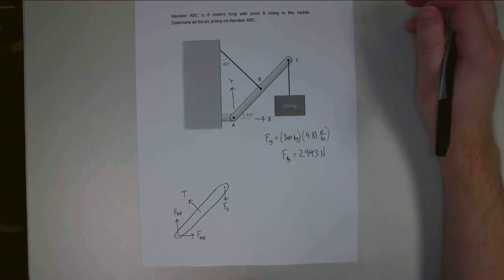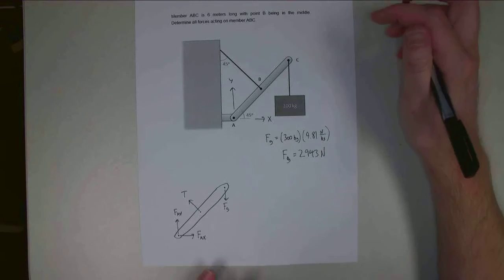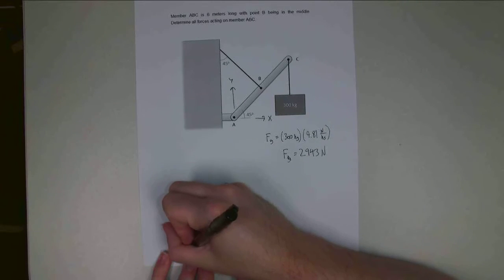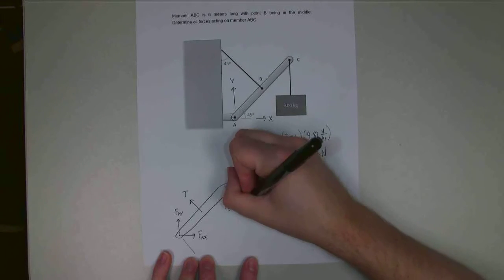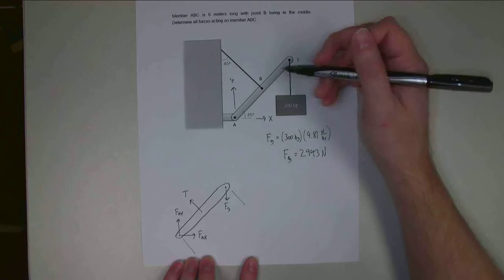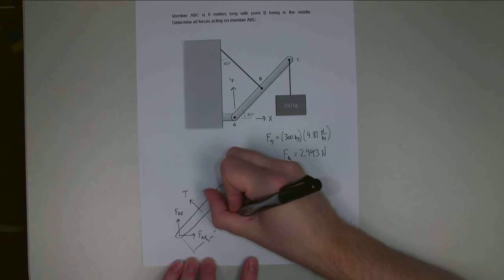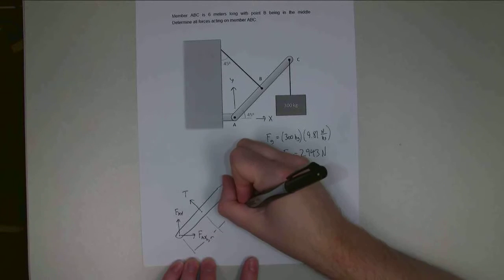Now I have all the forces drawn in. I'm also going to draw in some helpful dimensions. I know this whole thing is 6 meters long, and point B is in the center here. So it is 3 meters up to point B, another 3 meters from point B out to point C.